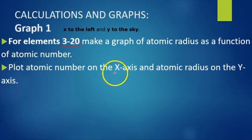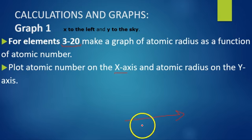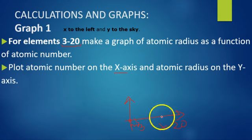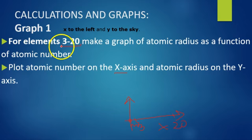You're going to plot the atomic number on the x-axis — remember, x to the left and y to the sky. Every graph starts at 0, so you're going to need to make a break in the graph since your first data point is element 3. We are not doing the data for elements 1 or 2, so they will not appear on your graph.